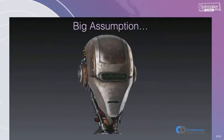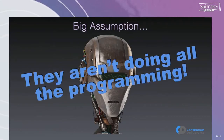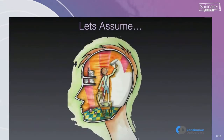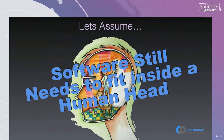The next thing to think about, if we're considering what's going to happen in a hundred years' time, is that it's us and not the machines that are writing the computer programs. If machines are doing all the programming, then some of my assumptions might be a little off. But let's assume for the sake of this talk that part of the difficulty of writing software is that it still needs to fit inside a human head — and that's a feature of what we need to get right.